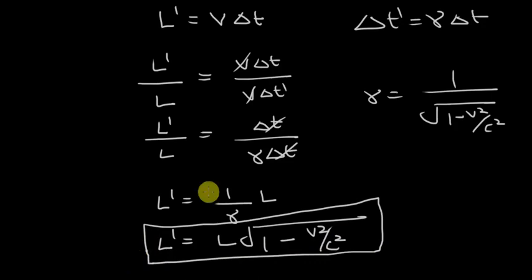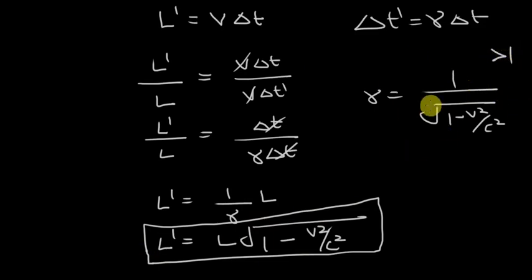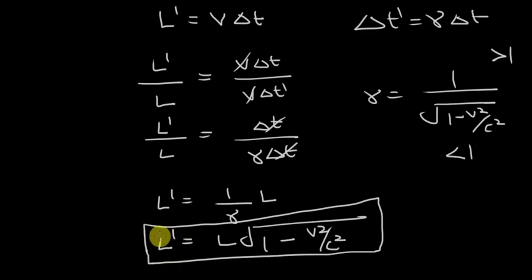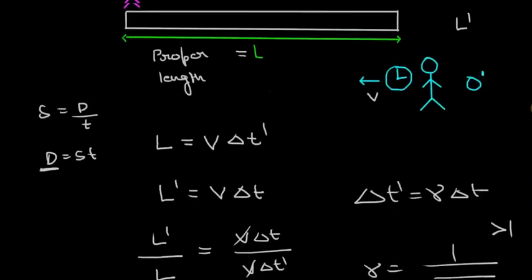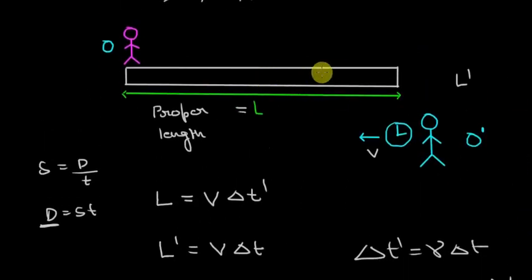This is the length contraction formula: L dash equals L times the square root of (1 minus V squared over c squared), since 1 over gamma equals the square root of 1 minus V squared over c squared. Gamma is greater than 1, so its reciprocal is less than 1. That means the improper length L dash is smaller than the proper length L — the length of the road is contracted for the moving observer.